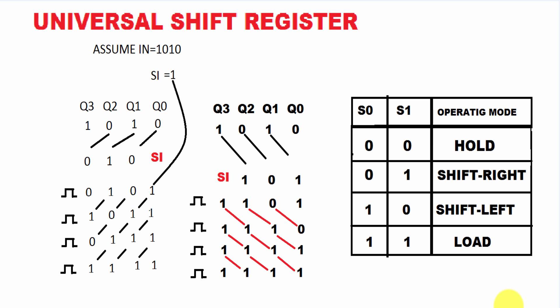Good morning friends. This is a VHDL program for a universal shift register. In a universal shift register, we have four conditions: hold condition, shift right condition, shift left condition, and load condition.